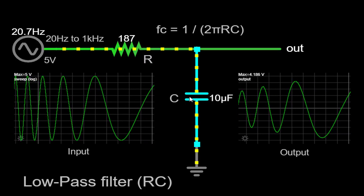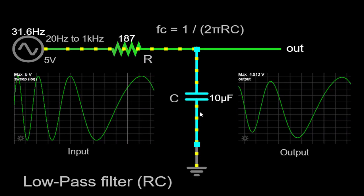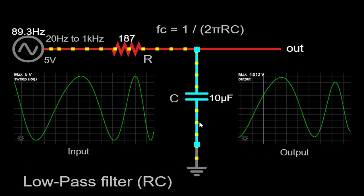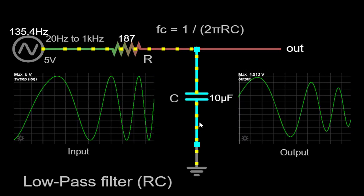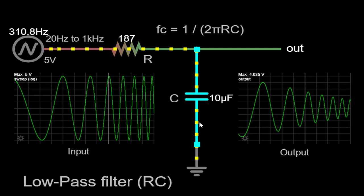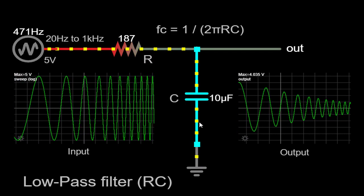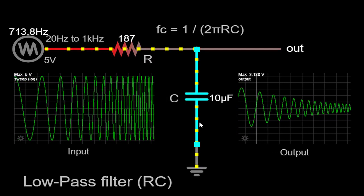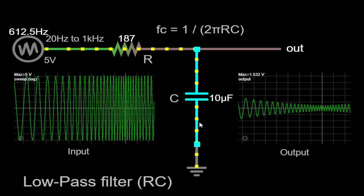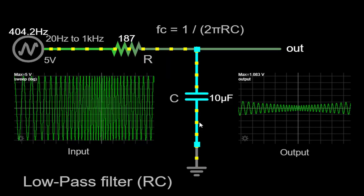The RC low-pass filter works based on the principle of charging and discharging the capacitor. At low frequencies, the capacitor charges and holds the charge, allowing the signal to pass through. However, at high frequencies, the capacitor cannot charge and discharge quickly enough, causing the voltage across the capacitor to drop, thereby attenuating the higher-frequency components of the signal.